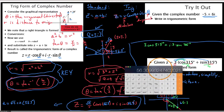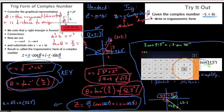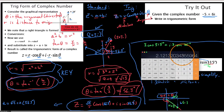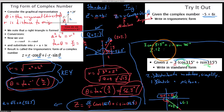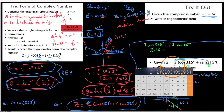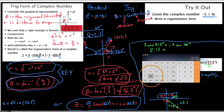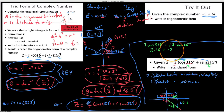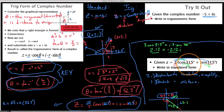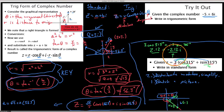Putting the calculator in degree mode: taking cosine of 315 times 3 gives 2.12. Then taking sine of 315 times 3 gives negative 2.12. So we get 2.12 plus negative 2.12i. Both coefficients have the same magnitude because 315 has a 45 degree reference angle — this is an isosceles triangle — and sine is negative in the fourth quadrant.